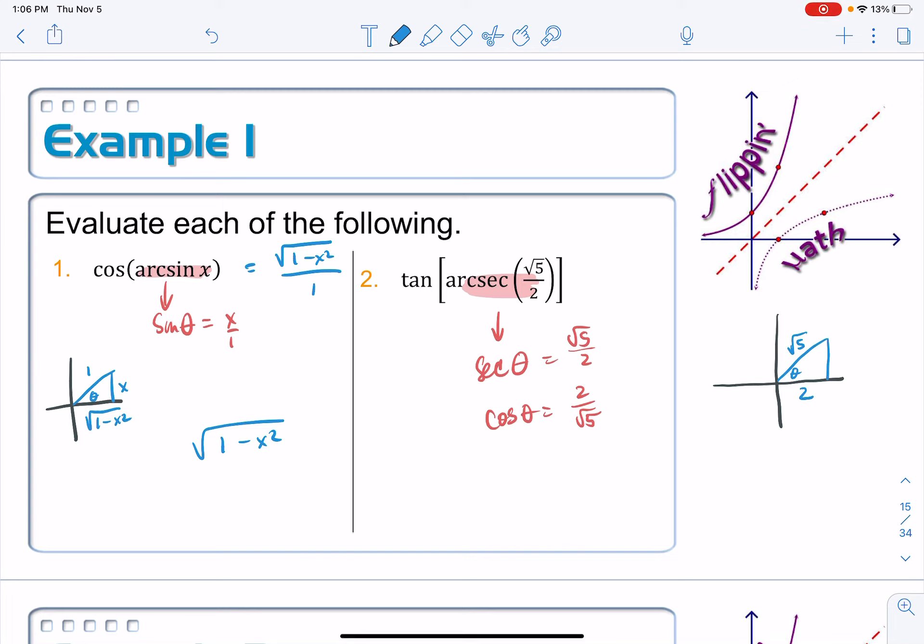Okay, and then I'll have to use the Pythagorean theorem. We'll call that one B. I'd have 2 squared is 4 plus B squared is equal to the square root of 5 squared, which is 5. So B squared is equal to 1, so B is equal to 1 also. All right, there we go. That's 1.